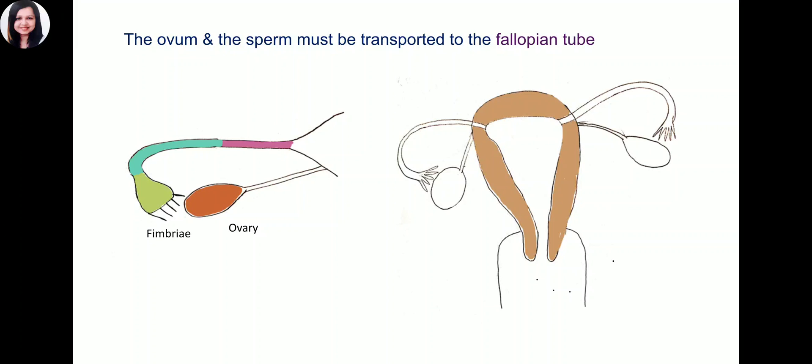What are the parts of the fallopian tube? The fimbria, which are finger-like projections; the infundibulum; the ampulla, site of fertilization; and the isthmus that is connecting the fallopian tube to the uterine cavity.